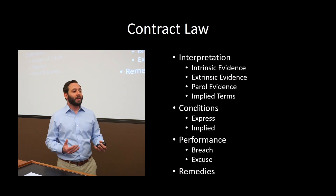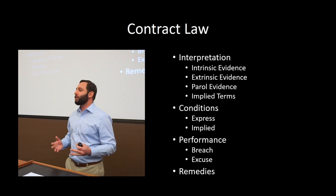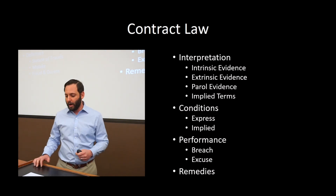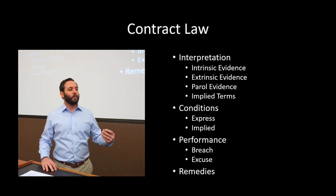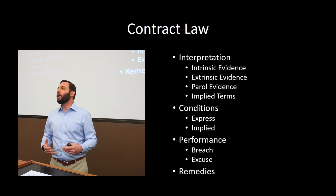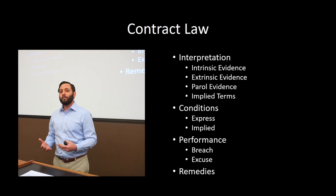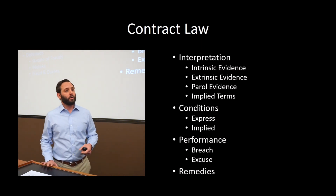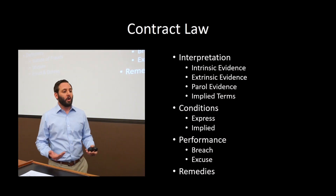We begin Contracts 2 with the presumption — the assumption that a contract has been formed and now the parties have obligations under it. We begin by interpreting that contract through intrinsic and extrinsic terms. We determine whether certain extrinsic evidence, known as parol evidence, should be admitted to modify, change, or make meaning of the contractual terms. And we also look at what terms were implied by the parties' conduct or by law.